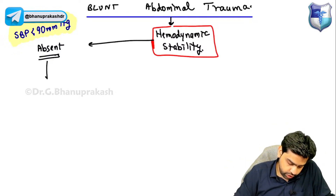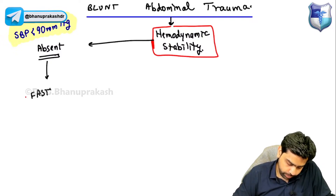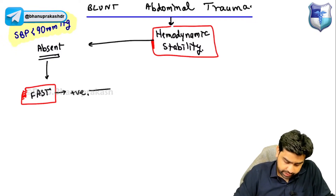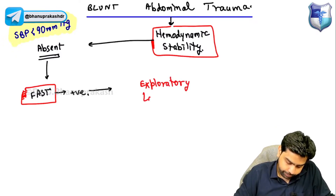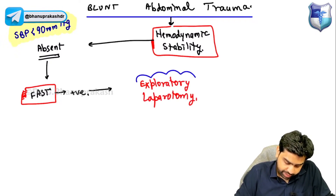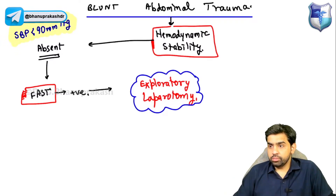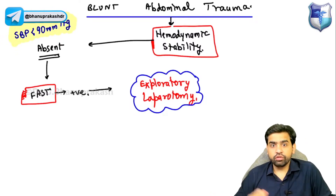In this scenario of hemodynamic instability, the first investigation you perform is FAST — Focused Assessment Sonography for Trauma. If the FAST is positive, you take the patient directly to exploratory laparotomy. No CT scan is needed, because the positive FAST indicates a significant intra-abdominal injury.